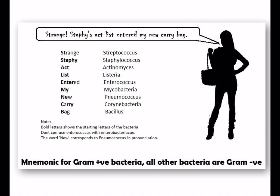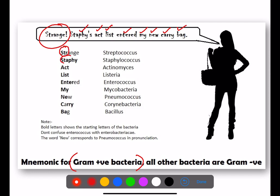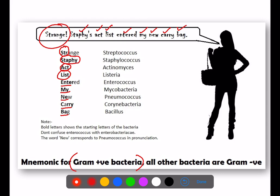Here is the mnemonic for gram positive bacteria: 'Strange Steffy's Act List Entered My New Carry Bag.' The bold letters represent the bacteria — Strange for Streptococcus, Steffy for Staphylococcus, Act for Actinomyces, List for Listeria, Entered for Enterococcus, My for Mycobacteria, New for Pneumococcus, Carry for Corynebacterium, and Bag for Bacillus.